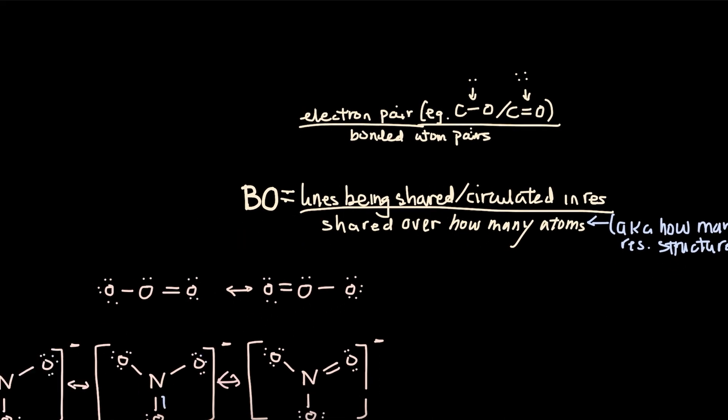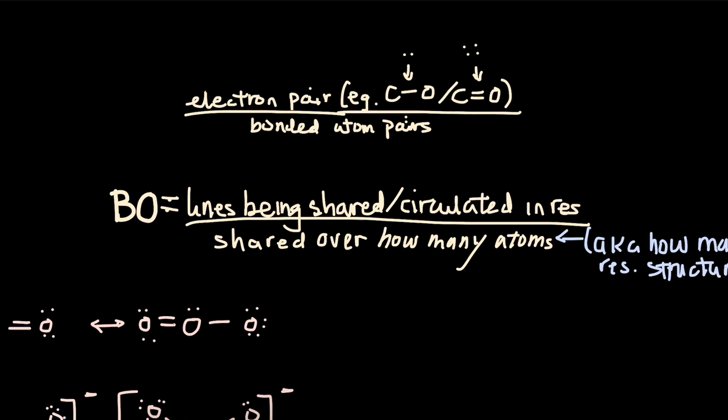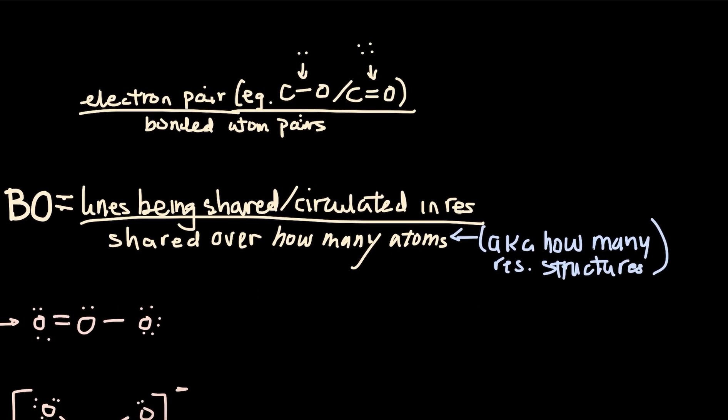The bond order for VSEPR theory, which is your geometry diagram, is calculated by the electron pairs divided by the bonded atom pairs. Or as I like to put it, it's the lines being shared or circulated in the resonance structure divided by how many atoms it's shared over.